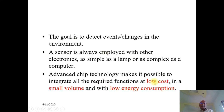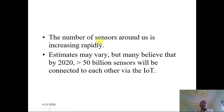Therefore, these three parameters — low cost, small volume, and low power consumption — are the desirable characteristics of sensors. The number of sensors around us is increasing rapidly. Estimates may vary from person to person or agency to agency, but many believe that by 2020, more than 50 billion sensors will be connected to each other via the Internet of Things.